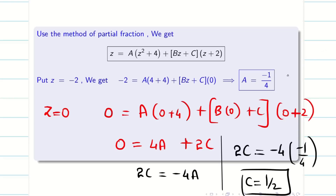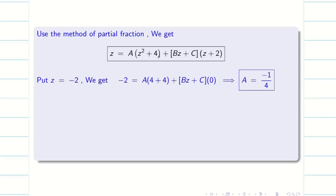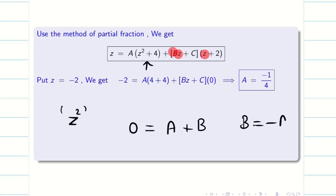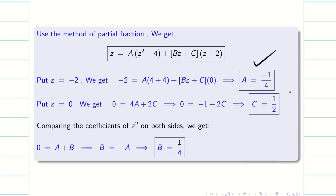Now I found A and C. Next, I compare coefficients of Z square. The left hand side is 0. On the right hand side, the first term gives A and the second term gives B. So B equals minus A, and immediately we get B equal to 1/4. Now we have all three values: A equals minus 1/4, B equals 1/4, and C equals 1/2. Substituting into F of Z by Z completes the problem.